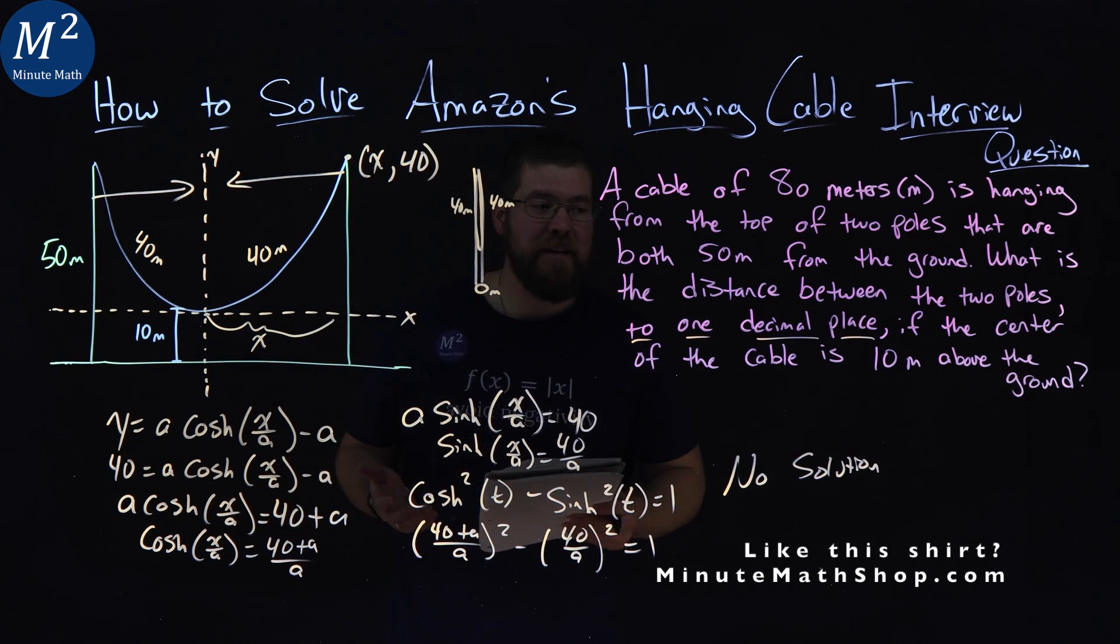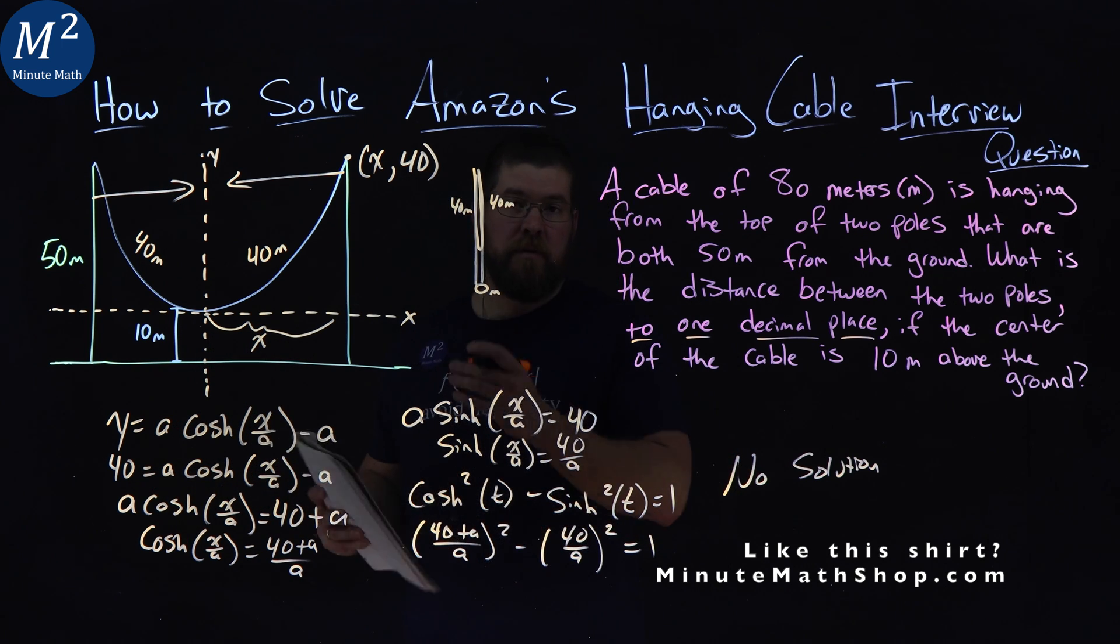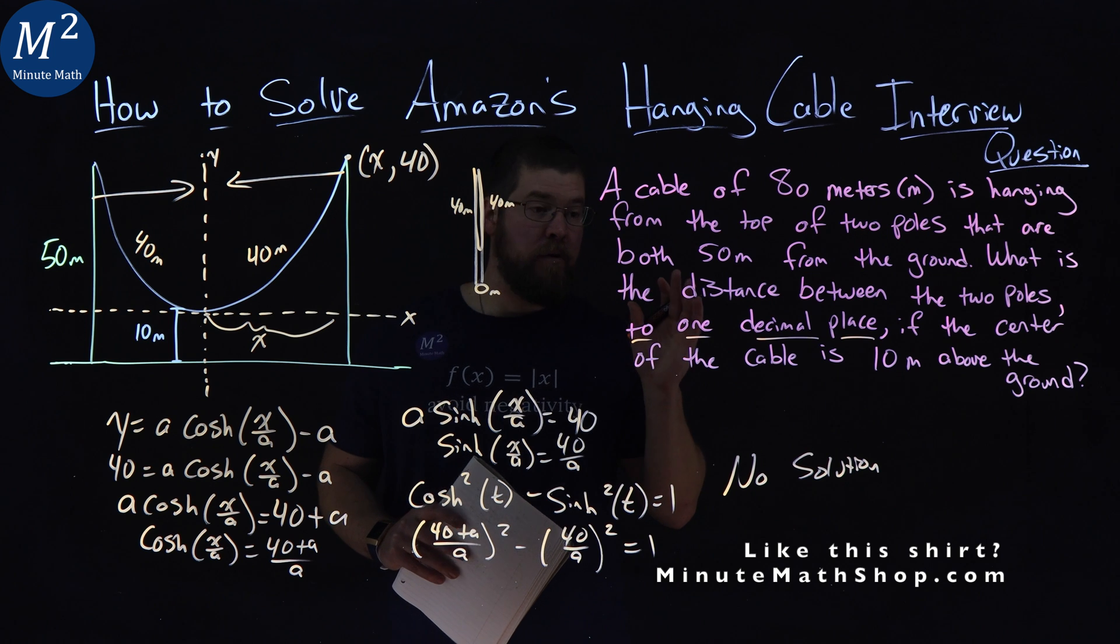So the answer here really is two poles are zero meters apart, and you can solve that just by using logic. And so that's why I think this is a great problem.